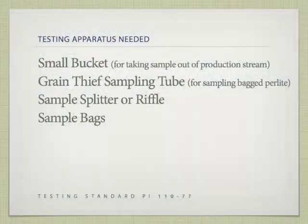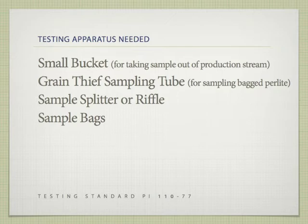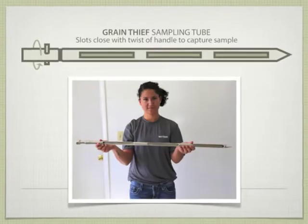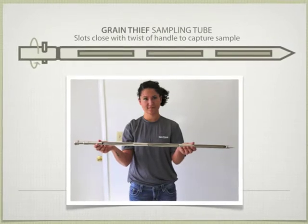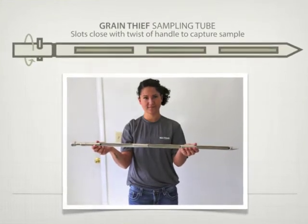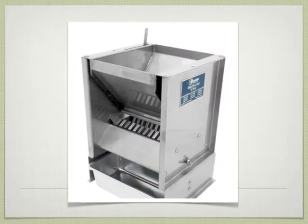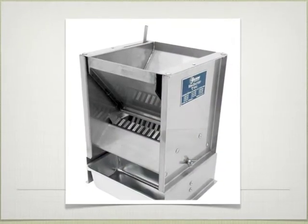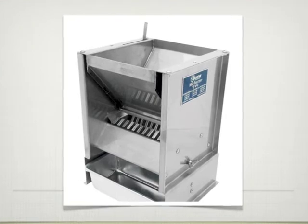To sample size expanded perlite from a production stream and or from bagged product, you will need the following: a small bucket, a grain-thief type sampling tube, a sample splitter or riffle, and sample bags.